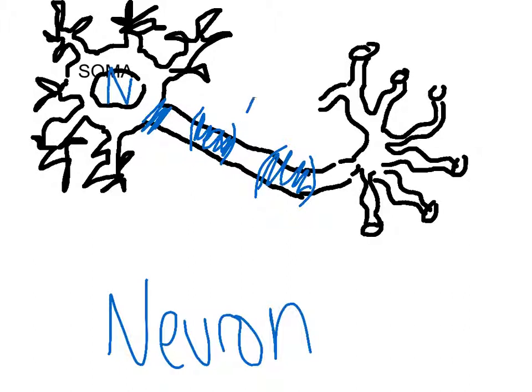And the little gaps that are in between these are called the nodes of Ranvier. They are sections where the axon is exposed, and they just help the messages jump from one myelin sheath to another and speed up the whole process as well.